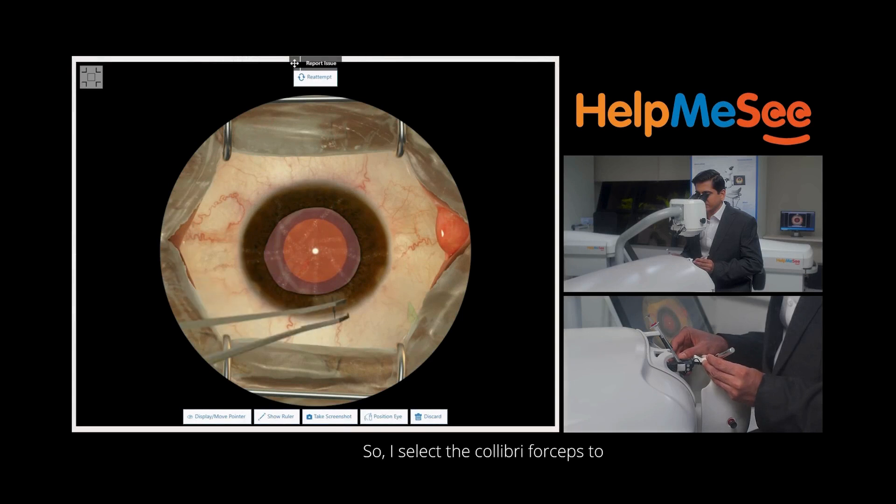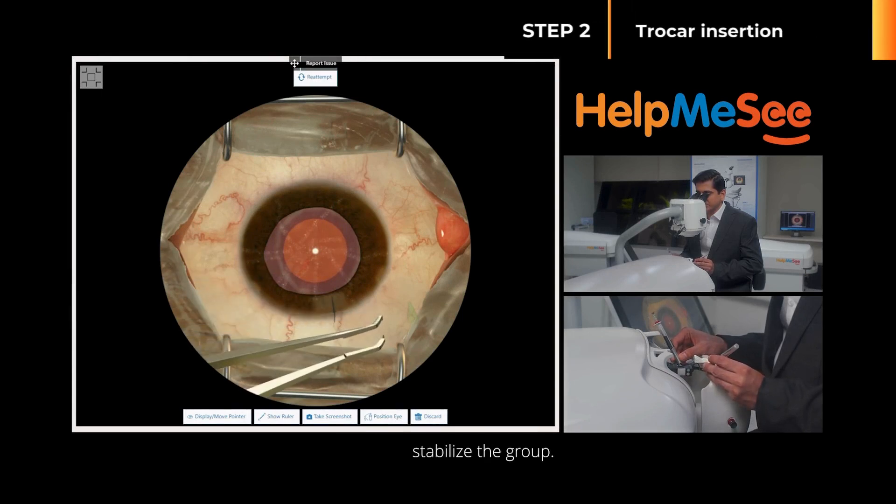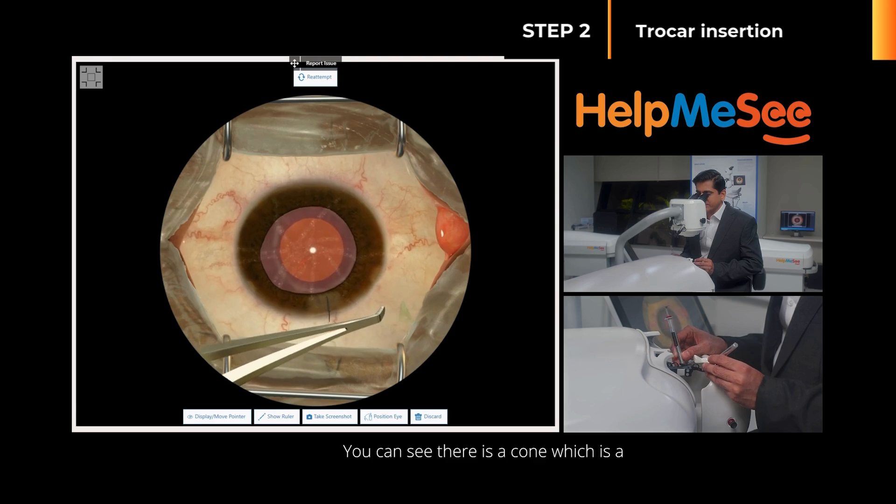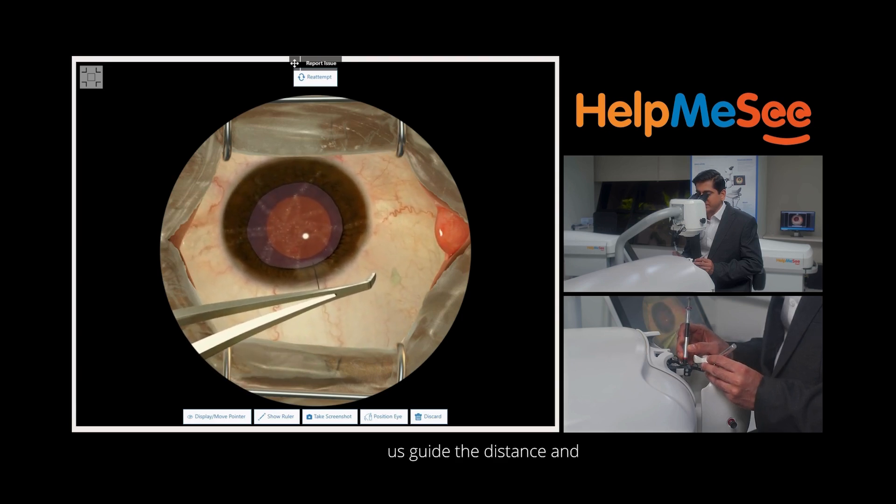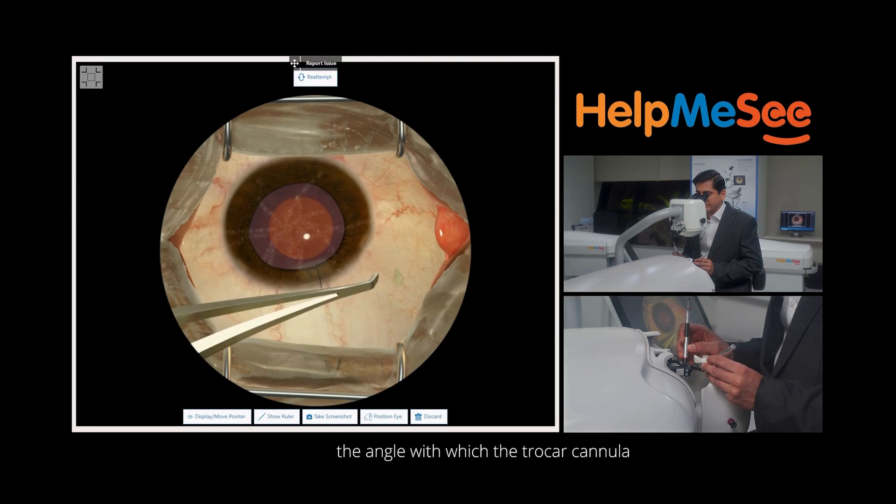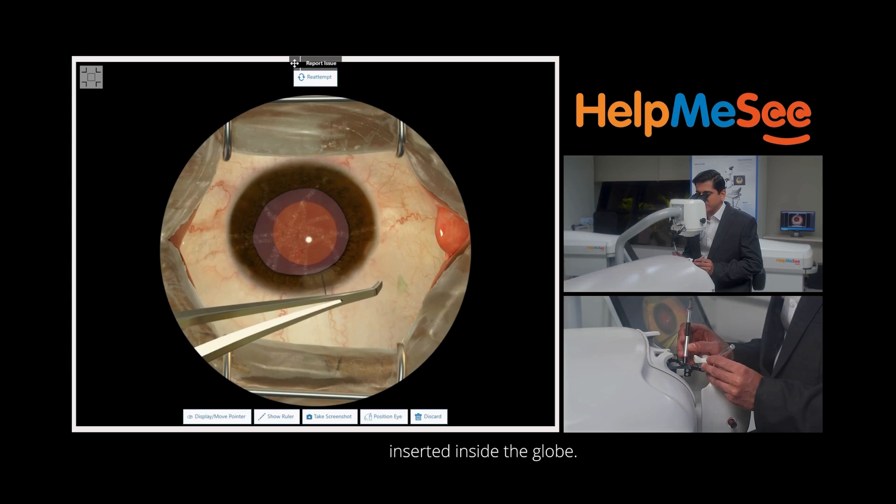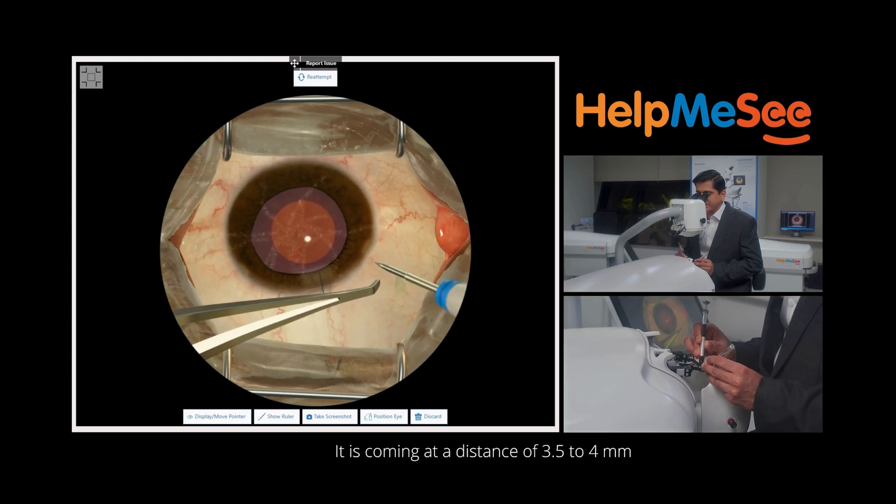I select the colibri forceps to stabilize the globe. You can see there is a cone which is a training tool which helps us guide the distance and the angle with which the trocar cannula system should be inserted inside the globe. It is coming at a distance of 3.5 to 4mm away from the limbus.